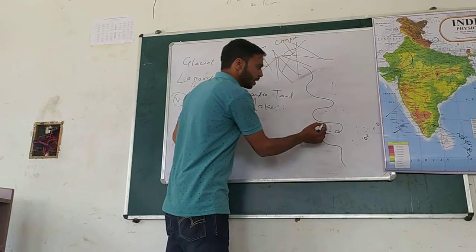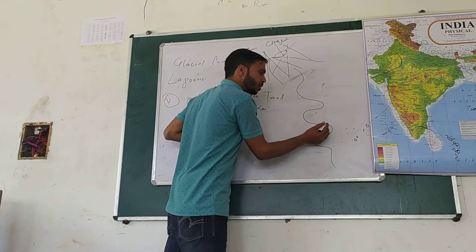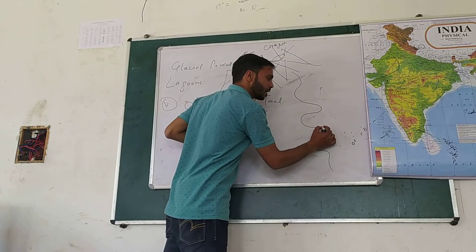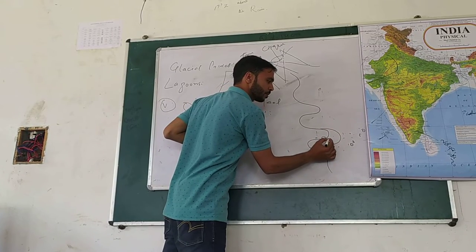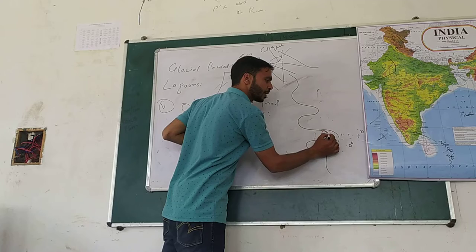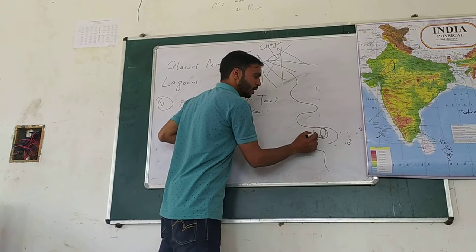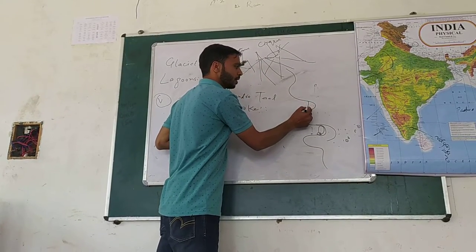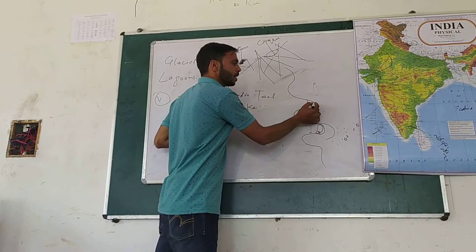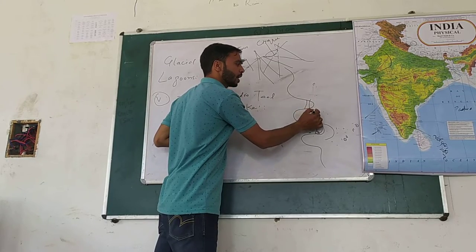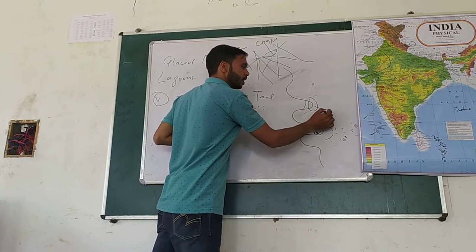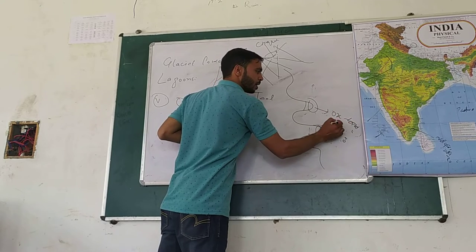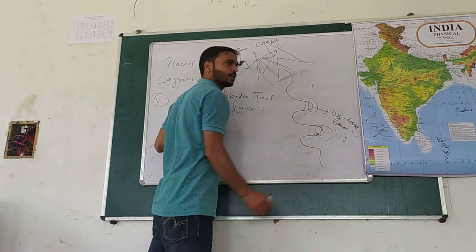What happens? This path is lost. The path shifts — this path is here, this path is here. Where does it go? Here. Oxbow. Simple. It is a mandatory process.